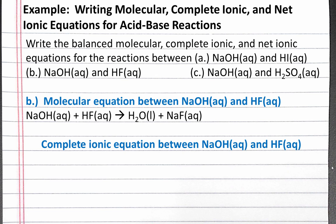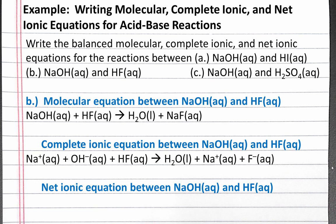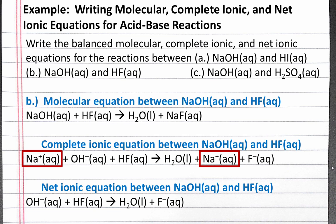To write the complete ionic equation, we need to split apart strong electrolytes. Here, the only strong electrolytes are sodium hydroxide and sodium fluoride, which are soluble salts. Hydrofluoric acid is a weak acid, so it is not a strong electrolyte — we keep it together as aqueous HF. To write the net ionic equation, we eliminate the spectator ion Na⁺. What's left is hydroxide plus hydrofluoric acid produces water plus fluoride. So here are our molecular, complete ionic, and net ionic equations for the reaction between sodium hydroxide and hydrofluoric acid.